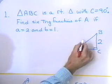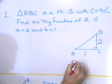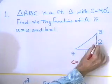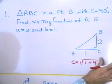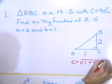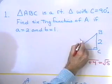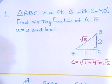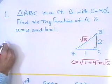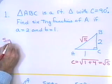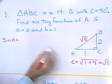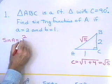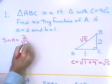By the Pythagorean theorem, the hypotenuse C is the square root of 1 squared plus 2 squared, which is the square root of 1 plus 4, the square root of 5. Now using our second definition, the sine of angle A is the side opposite angle A, which is 2, divided by the hypotenuse square root of 5. So sine A equals 2 over square root 5.